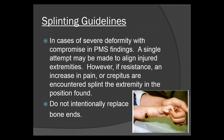In cases of severe deformity with compromise and PMS findings, a single attempt may be made to align the injured extremity. However, if you have resistance, increased pain, or if you feel any crepitus, splint the injury in the position found. Do not intentionally replace bone ends into the skin. If there is crepitus or an increase in pain, you could sever nerves or blood vessels and make things worse. Just splint it where you found it and transport it that way.